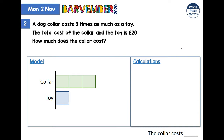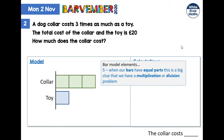You can see that we've drawn our model reflecting the first line of the problem — that the collar costs three times as much as a toy. This is a very important element in bar modeling. When we see equal parts, as we do here with four equal parts, that's a really big clue that we are either going to be doing some multiplication or some division, or indeed both as in this case.